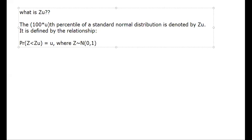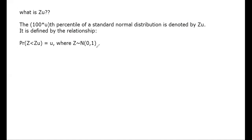This is how we write the normal distribution. Z ~ N(0, 1) means it is a standard normal distribution. If Z is normally distributed this way, then Z_u is known as the 100·U-th percentile of the standard normal distribution.